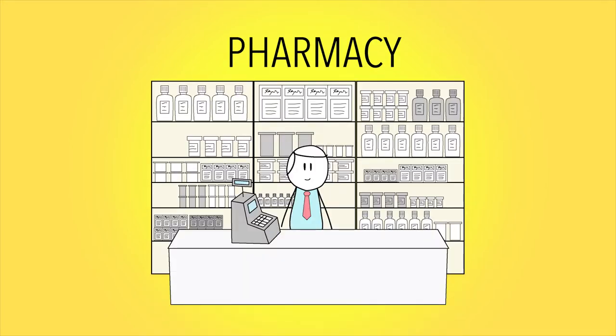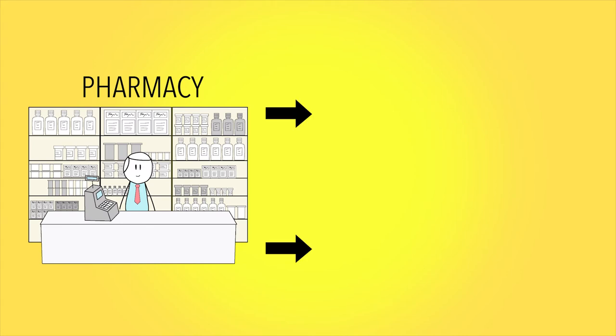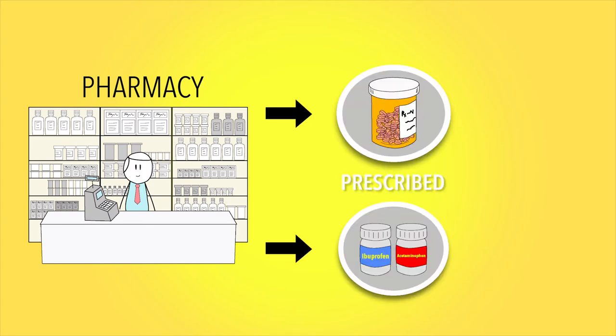There are two types of medicine you can get from a pharmacy. One type is called prescribed medication. Another type is called over-the-counter medication.